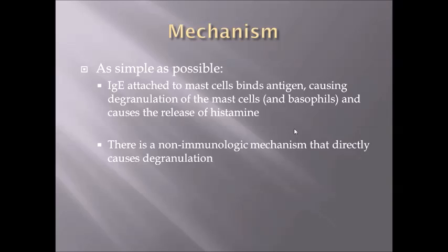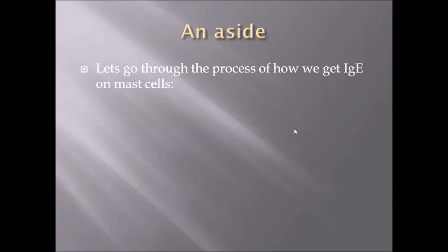Of note, there is also a non-immunologic mechanism — the IgE-mediated pathway is immunologic. The non-immunologic mechanism directly causes degranulation of mast cells and basophils without involving IgE. Let's go through how IgE actually gets onto mast cells.